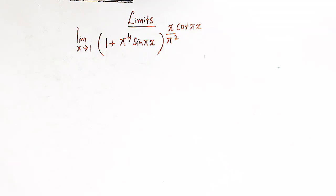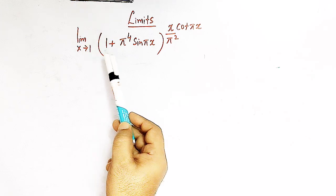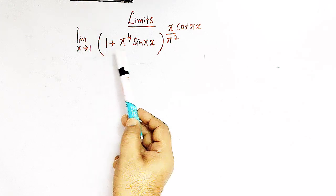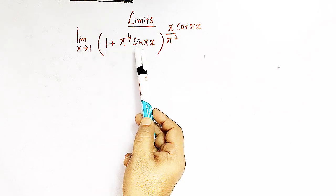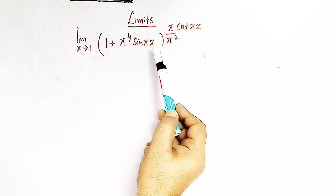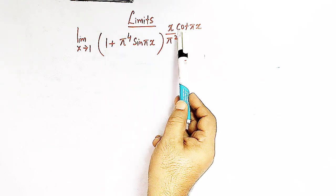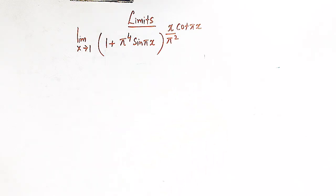Hello viewers. In today's session we are going to discuss another important problem from limits. Here we have to evaluate the limit: limit x tends to 1 of (1 + π⁴·sin(πx)) raised to the power x over (π²·cot(πx)).